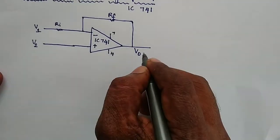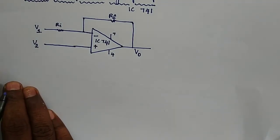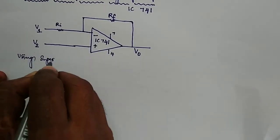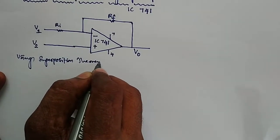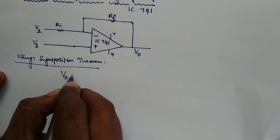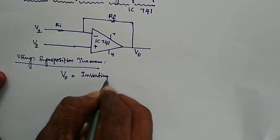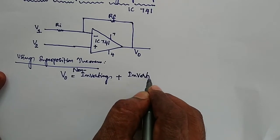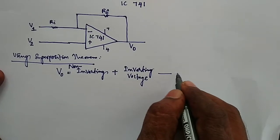Now, you have to calculate the output voltage as a combination of both inverting and non-inverting modes. With the help of the superposition theorem, you can calculate the output voltage. Generally, you can calculate V0 using this expression — this is equation number 1.